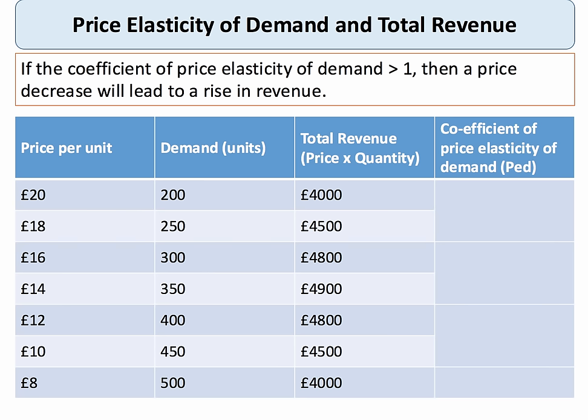Let's look at the important relationship between elasticity of demand and a business's total revenue, which we calculate as price per unit multiplied by quantity. Here's a table to illustrate. If we cut the price from £20 per unit to £18, demand increases by 50 units, and total revenue goes up by £500. Putting the numbers in, the coefficient for price elasticity is 2.5.